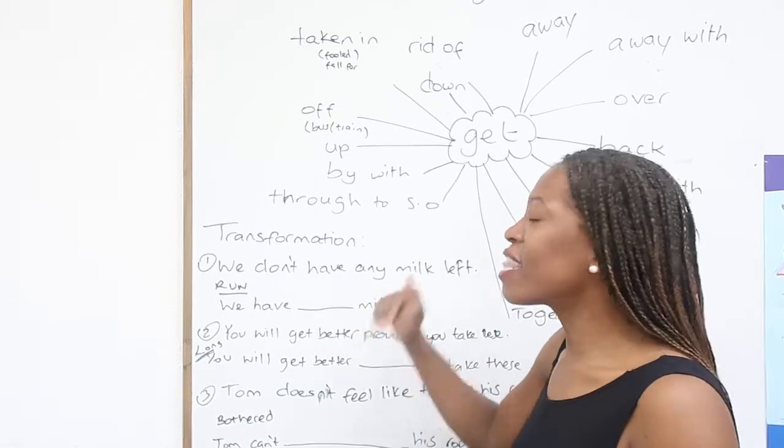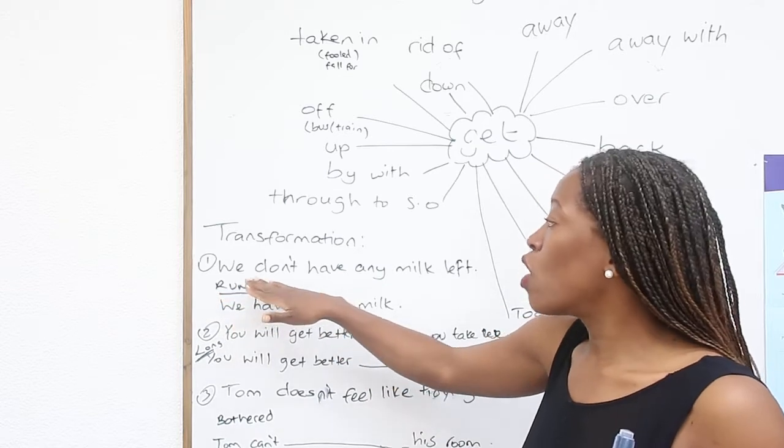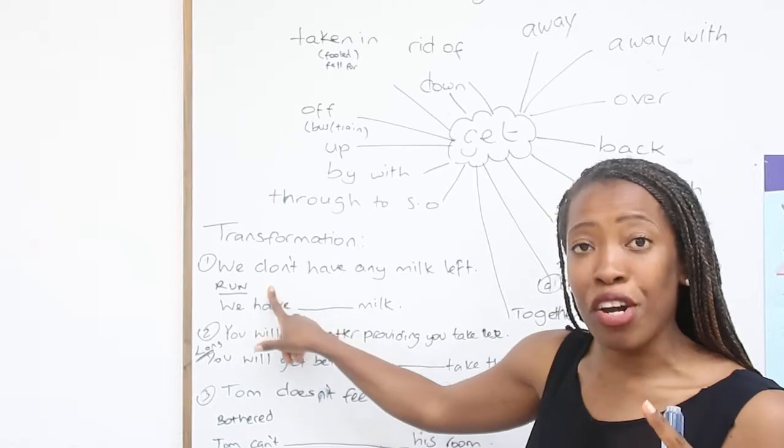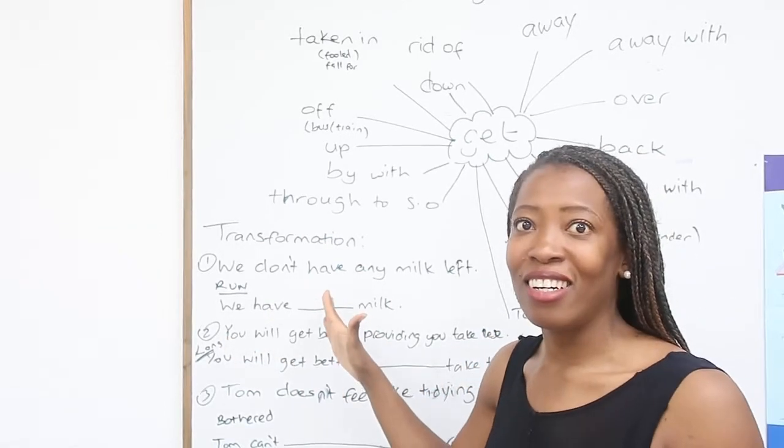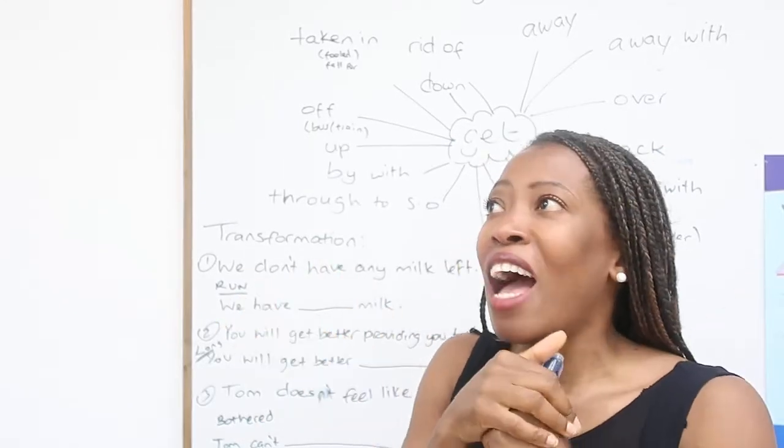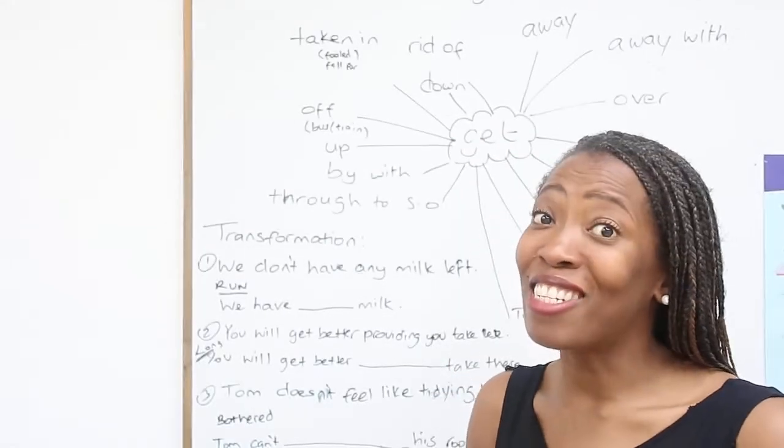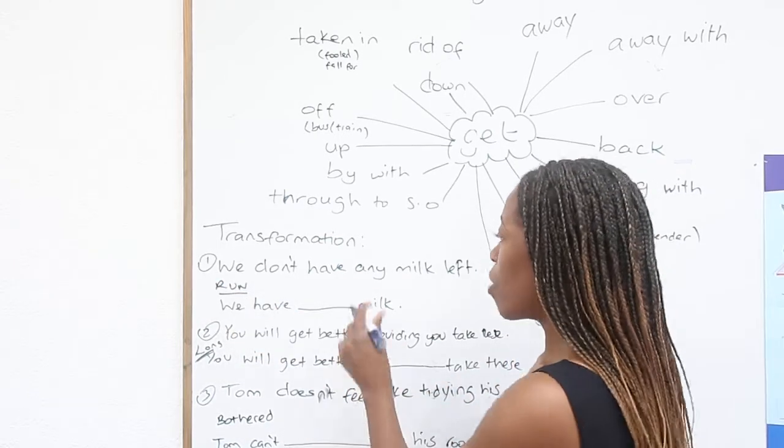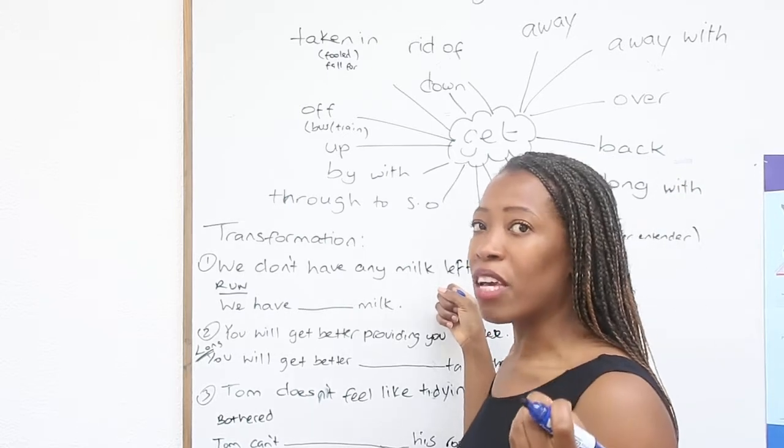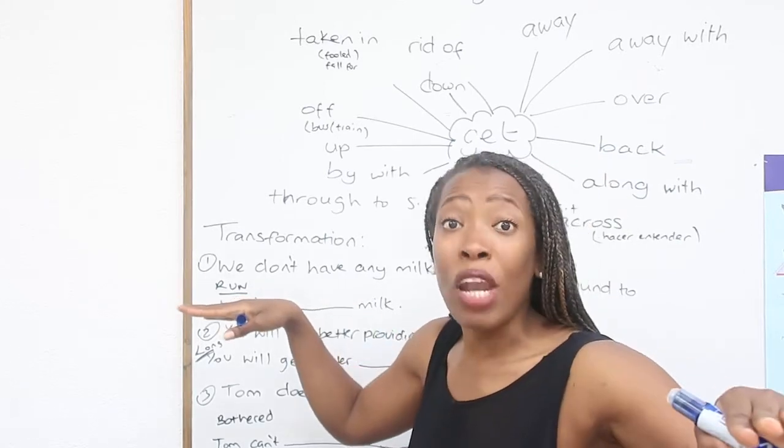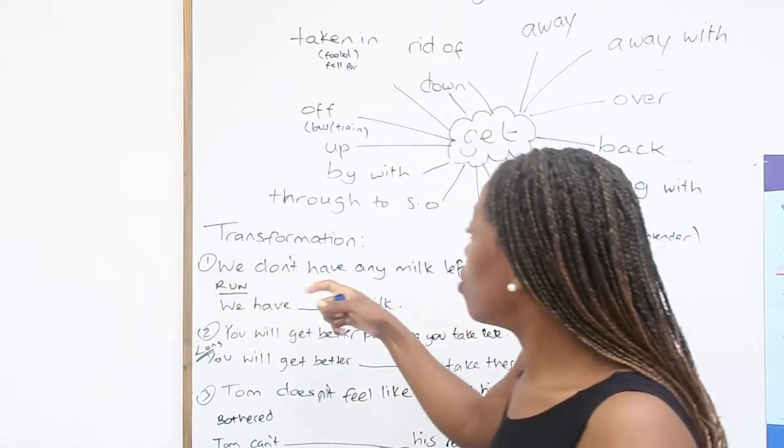So I'm going to give you an example and then I will go through how you can revise phrasal verbs. This first sentence that you've been given is this: We don't have any milk left. Now the given word is run. If you don't know that there's an expression with the word run, you're going to panic here because you'll think, oh gosh, what do I put? It doesn't make any sense. How can you run with milk?